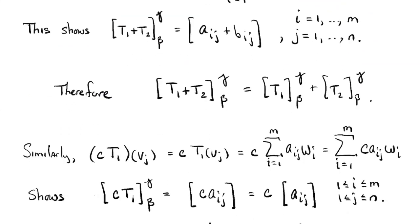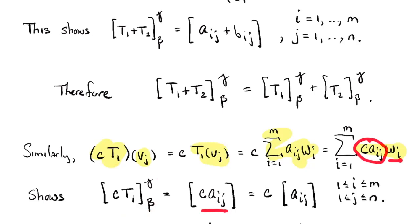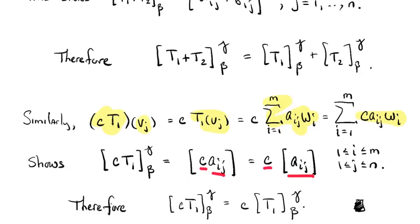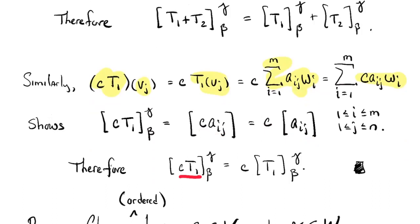Likewise, taking scalar C times T1 applied to the Jth basis vector: using the linearity of T, since T1(Vj) is the sum of AIJ times WI, distributing C through gives the sum of C·AIJ times WI. So the matrix of CT1 has entries C times AIJ, which by matrix operations equals C times the matrix of T1. That completes the proof of theorem 2.8.